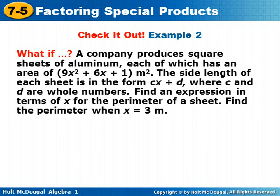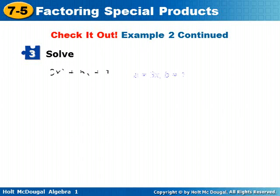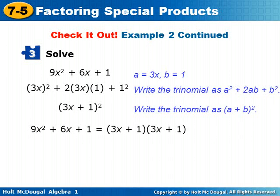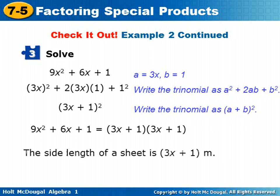Here's an example for you to try on your own. A company produces square sheets of aluminum, each of which has an area of 9x squared plus 6x plus 1 meters squared. The side length of each sheet is in the form Cx plus D, where C and D are whole numbers. Find an expression in terms of x for the perimeter of a sheet, and find the perimeter when x equals 3 meters. So the area was 9x squared plus 6x plus 1. A is 3x and B is 1 — this is a perfect square trinomial pattern. We write it as 3x squared plus 2 times 3x times 1 plus 1 squared. Factored, it is 3x plus 1 squared, or A plus B squared, which is also 3x plus 1 times 3x plus 1. So the side length of a sheet is 3x plus 1 meters.